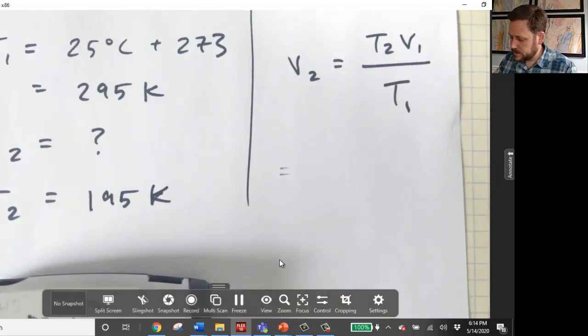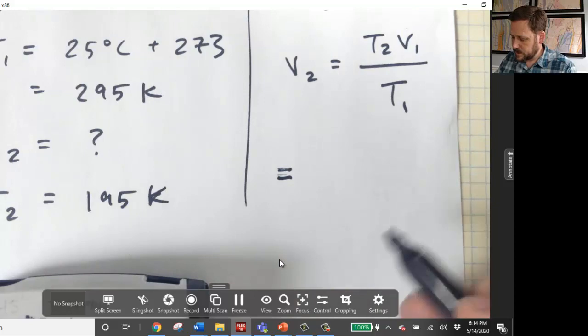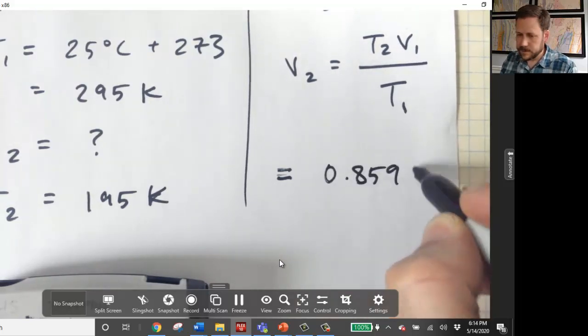Rounding that to the correct number of significant figures, which in this case is three, gives me 0.859 liters.